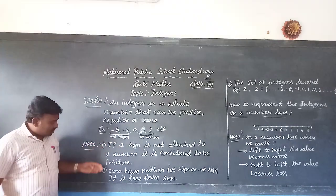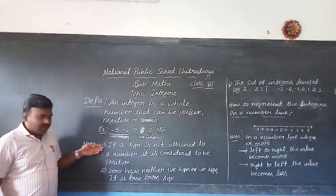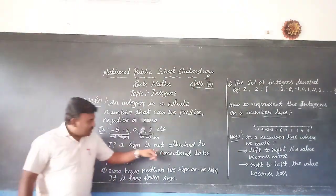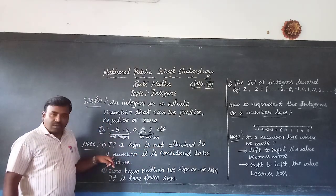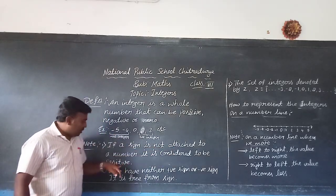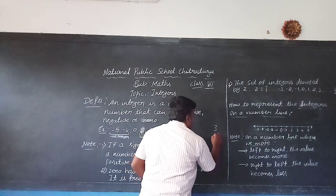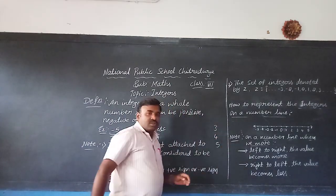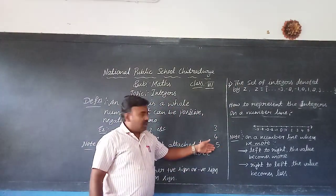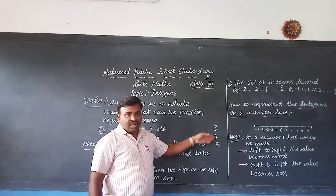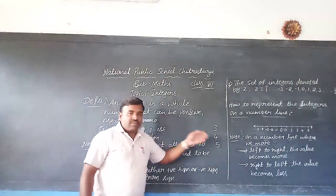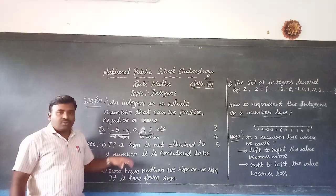Students, here are some three important points. The first one is, if a sign is not attached to a number, it is considered to be positive. For example, 3, 4, 5. So here I have written the three numbers. Any sign is not attached to a number. That's why this type of numbers are called the positive number, that means positive integers.